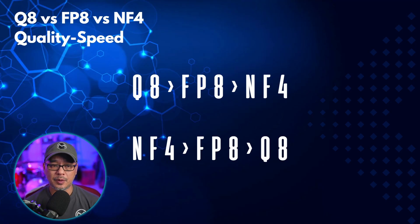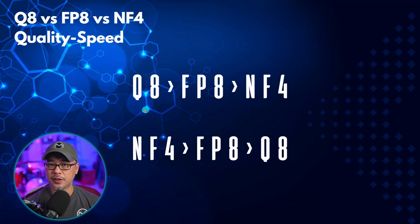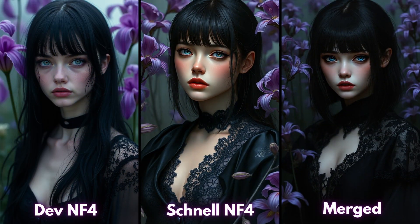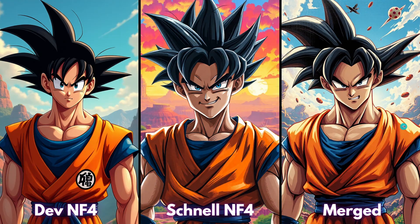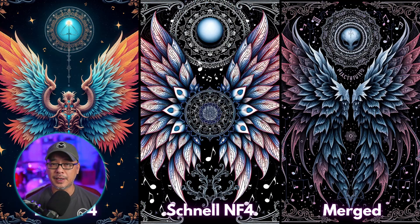Ultimately it comes down to your system and what's more important to you — quality versus speed. Sometimes I start with NF4 for speed, and if there's an image I really like I'll switch to the Q8. Whenever there's support for ControlNets in WebUI Forge with Flux, using NF4 or GGUF models may help because of the smaller file size. In the next video we'll talk about Hyperloras available for the dev model, as well as Schnell and merged models, which can generate images in only 4 to 8 steps. If you're just starting out with WebUI Forge and Flux, make sure to check out any one of these videos.